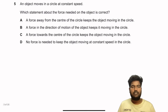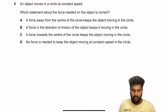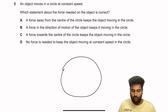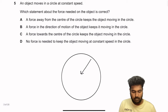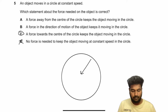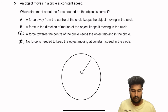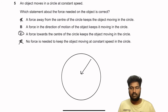Question 5: An object moves in a circle at constant speed. The condition for circular motion is that there must be acceleration and force directed towards the center. No force is needed — wrong. Force towards the center keeps the object moving in a circle — correct. Force in the direction of motion — wrong. Force away from center — wrong. So force towards the center of the circle is the right answer.